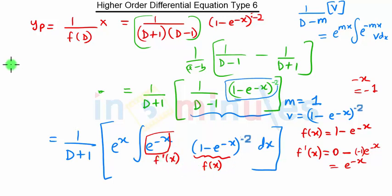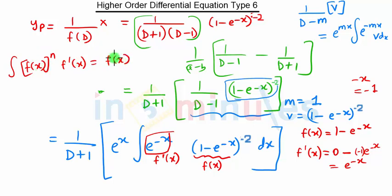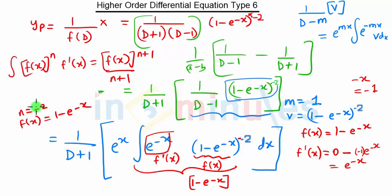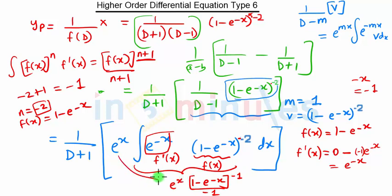Since we have f of x and f dash of x, we use the formula: integration of f of x raised to n into f dash of x equals f of x raised to n plus 1 upon n plus 1. In our case, n is minus 2 and f of x is (1 minus e raised to minus x). So the integration gives f of x raised to minus 1 divided by minus 1. E raised to x will remain as it is, and then we still have the 1 upon (D plus 1) operator to apply.